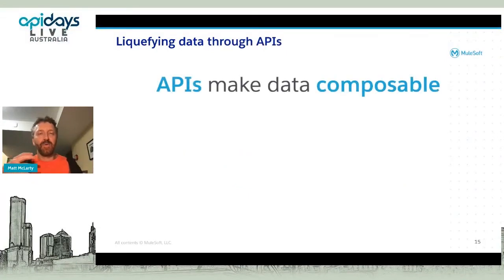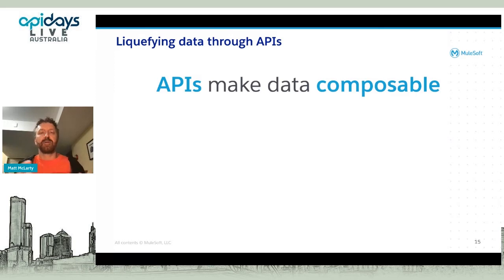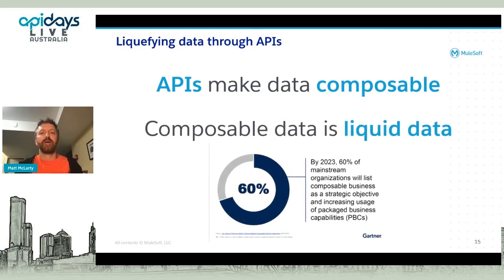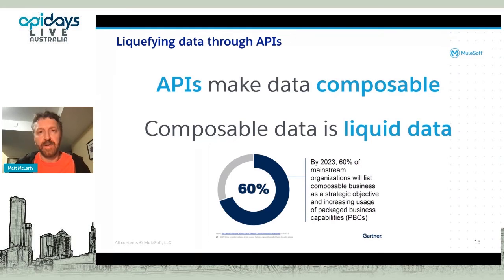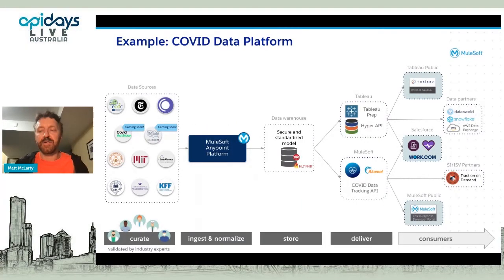At MuleSoft we talk a lot about the composable enterprise and the power of composability — the ability to break down capabilities in your organization through APIs so they can be composed in any context. APIs can do the same thing for data. Composable data is liquid data. If we're striving for data liquidity in order to maximize data value, Gartner has also been talking recently about the importance of composability, and Mike talked about modularity in his keynote — it's where the whole industry is going.